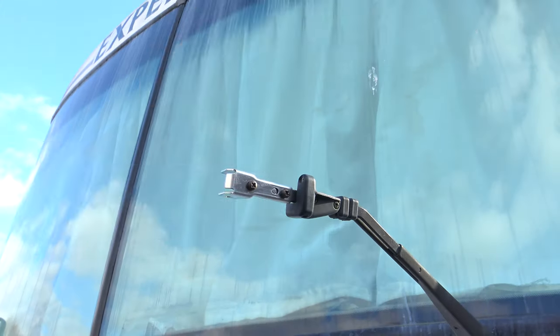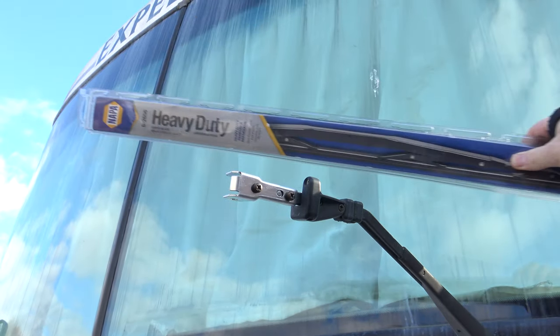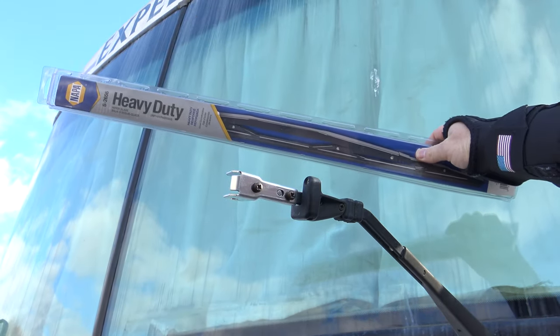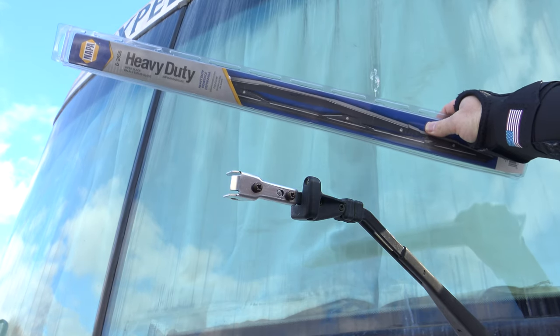These adapters make it so heavy duty wiper blades with a saddle style mount fit your RV now. It's about 30 to 35 bucks per blade. Boom, fixed.